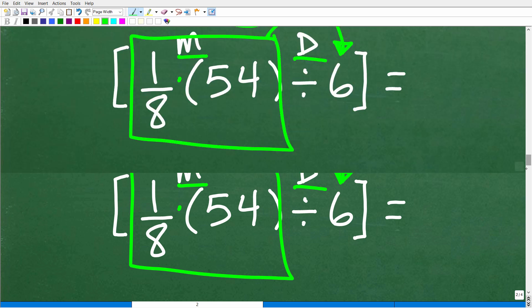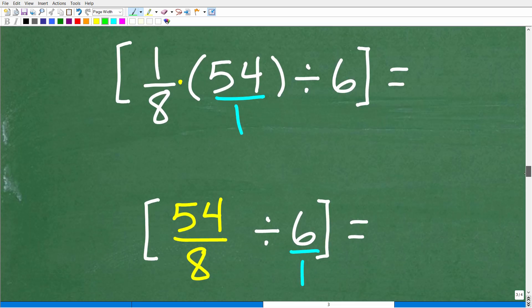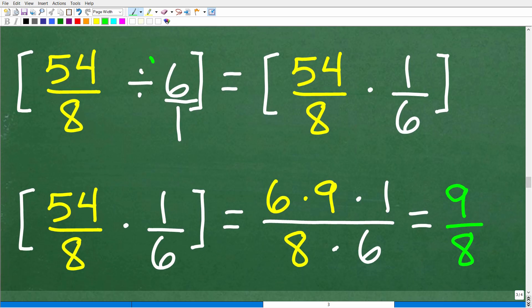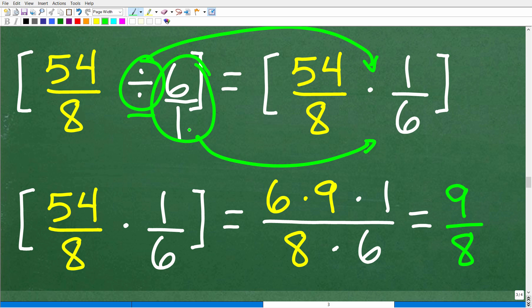Okay. So, let's go ahead and do that right now. So, 1 eighth times 54, or 54 over 1. All we have to do to multiply fractions is to multiply the respective numerators and denominators. So, that's 1 times 54. So, that's 54 over 8 times 1, which, of course, is 8. And we're going to divide that by 6 or 6 over 1. Okay. So, how do we divide fractions? This is very easy. So, what we're going to do is change this into a multiplication problem by flipping the fraction to the right of the division symbol. So, instead of 6 over 1, now we have 1 over 6.